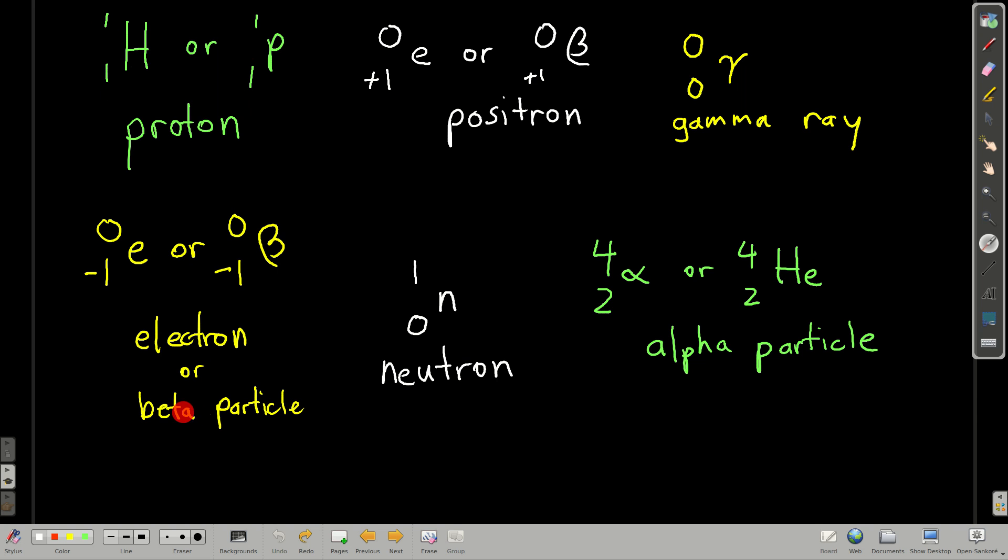We have an electron, also called a beta particle. It could be either an E, zero on top, negative one on bottom, or a beta, zero, negative one. We have a positron, which is the anti-particle of the electron. Its symbol is E or beta, zero on top. The difference is it has a positive one down here on the bottom.